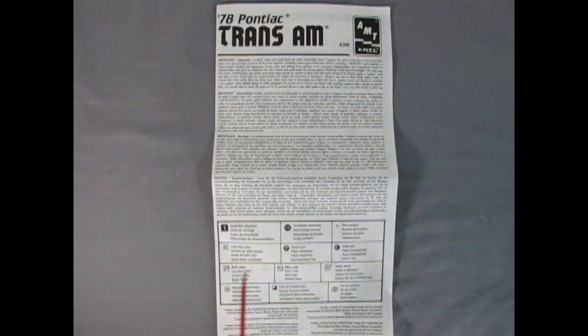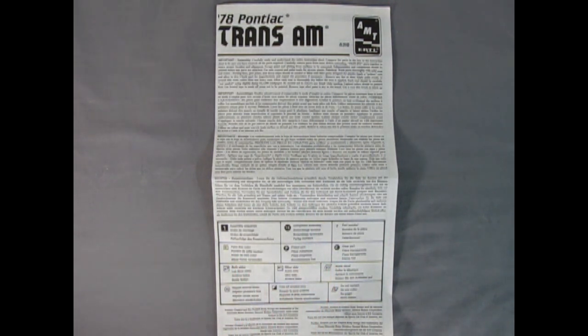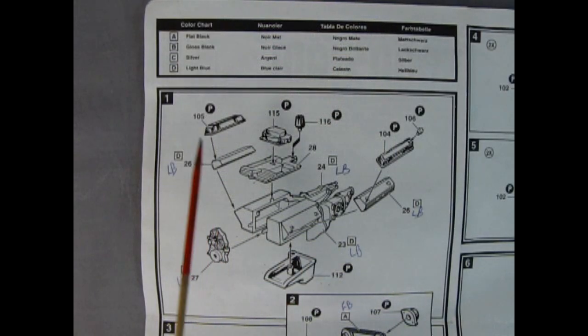Here we have our instruction sheet which is one of those great big foldout styles. We have our important details up here in many different languages as well as all the little symbols we will see as we build the model kit. Just above our first panel we have this nice color chart with all the colors marked by a lighter.